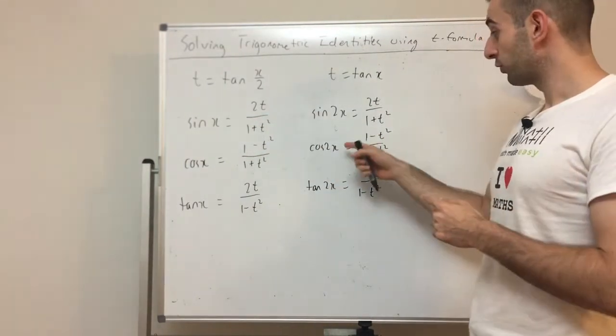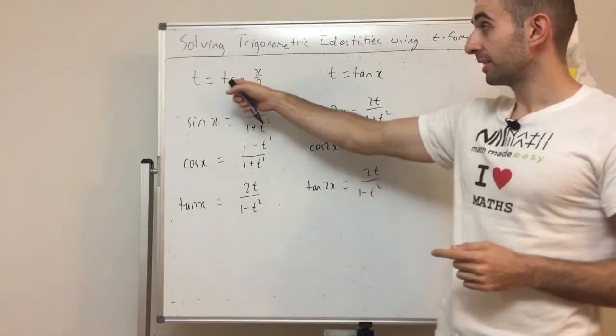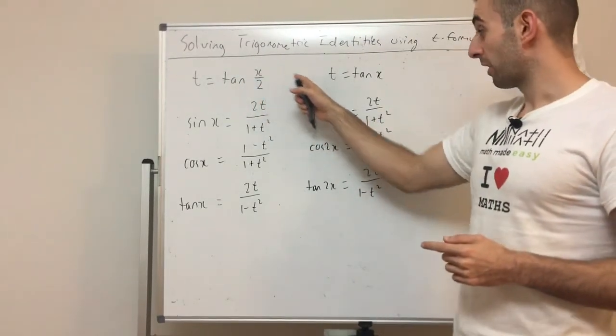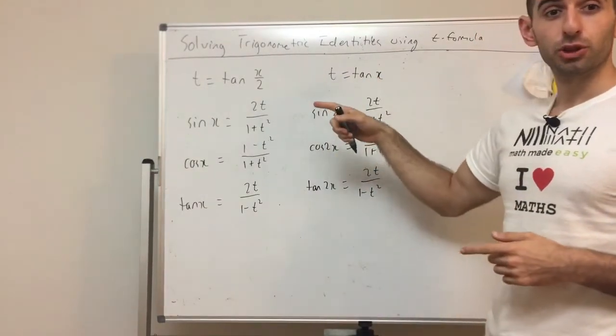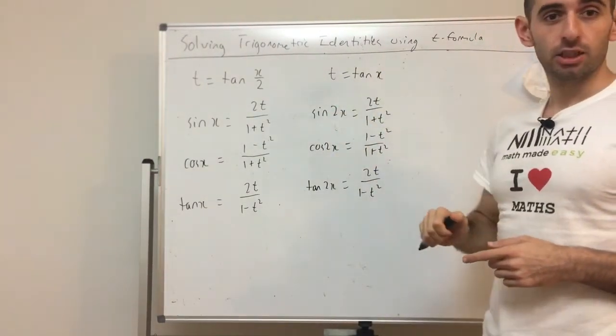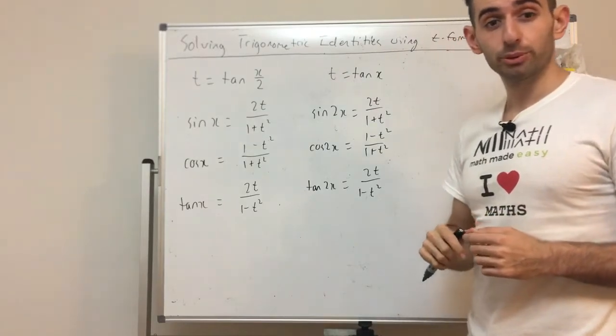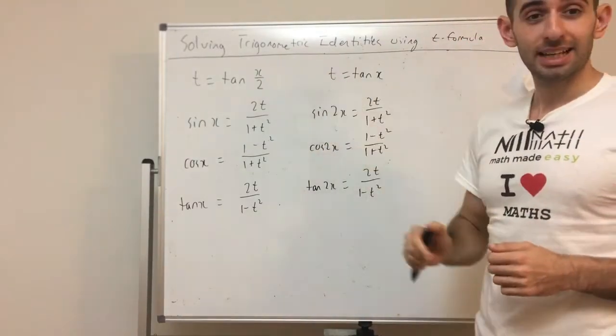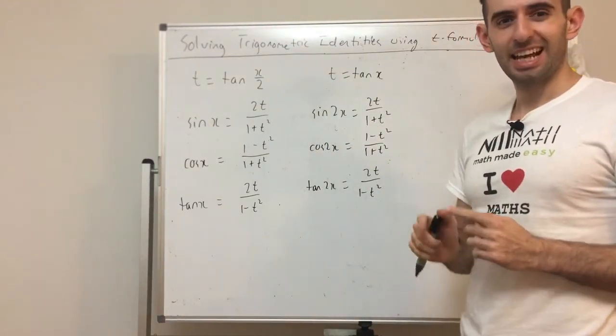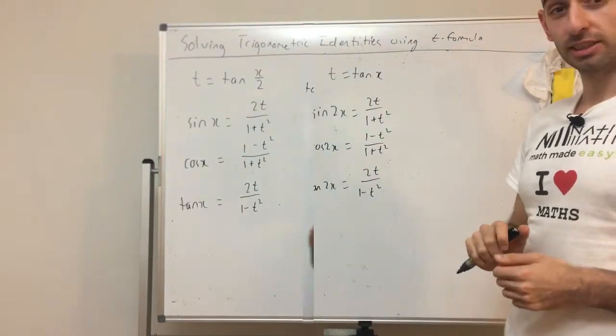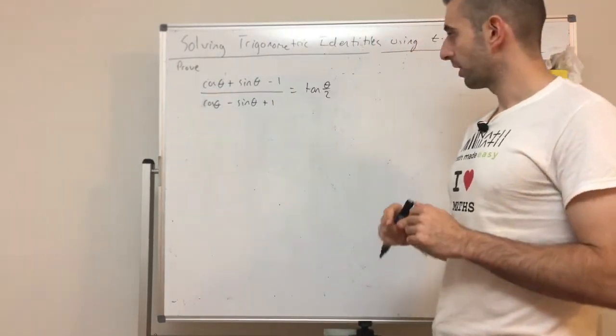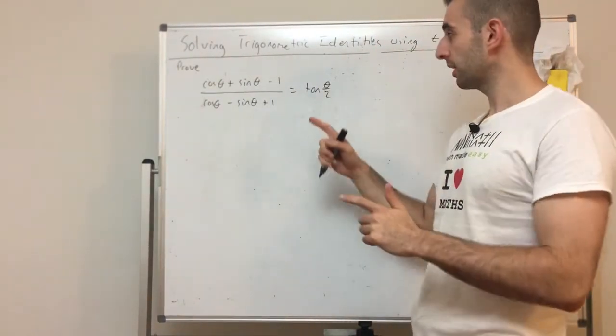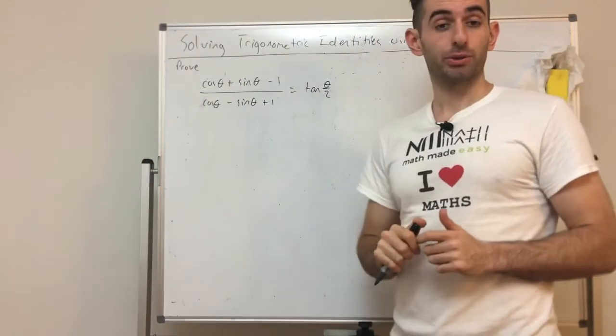So in questions that involve 2x, you're not going to use T equals tan x on 2 because that would be a four angle. We don't have a four angle result, we only have double angle. So your substitution would be T equals tan x. Now let's do two different examples of how you would apply these and why these proofs are much easier and the trick to make it much easier. Let's look at this example. Prove cos theta plus sine theta minus 1 over cos theta minus sine theta plus 1 equals tan theta on 2.